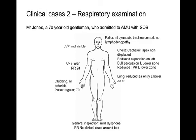The next clinical case is the respiratory examination. So, thank you for allowing me to examine Mr. Jones, a 70-year-old chap who's presented to the AMU with shortness of breath. On general inspection, he was mildly dyspnoeic at rest, with no clinical clues around the bed suggestive of respiratory disease. Examination of the hands revealed clubbing. There was no CO2 retention flap. The pulse was 70 and regular, and he was tachypnoeic at a rate of 24. Blood pressure was 110 over 70. The JVP was not visible and there was no lymphadenopathy. On closer inspection of the face, there was no pallor or central cyanosis. On closer inspection of the chest, there were no scars, but he appeared cachectic. The apex beat was non-displaced. Chest examination revealed a central trachea, reduced expansion to the left, with dull percussion in the left lower zone.